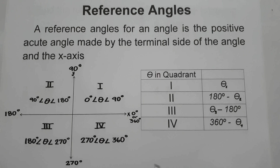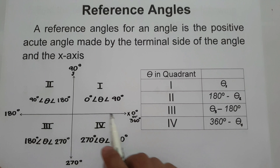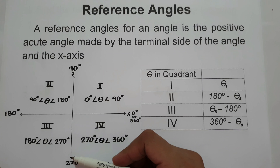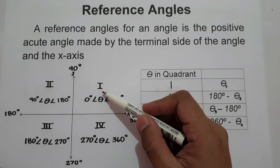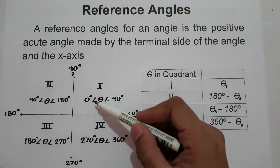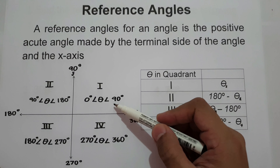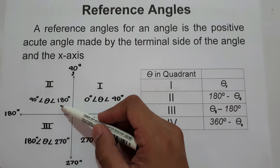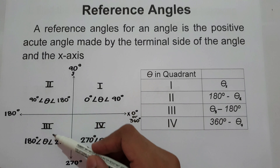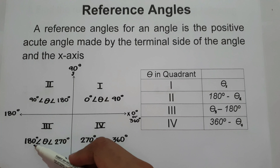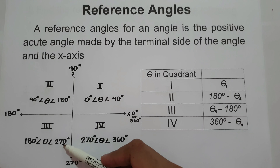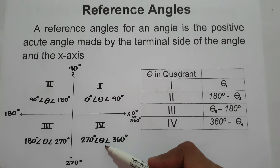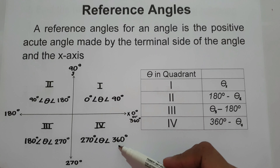As you can see, we have a Cartesian coordinate plane. This will be the x-axis and this will be our y-axis. We have four quadrants. Quadrant 1 exists between 0° and 90°. Quadrant 2 exists between 90° and 180°. Quadrant 3 is between 180° and 270°. And quadrant 4 is between 270° and 360°.